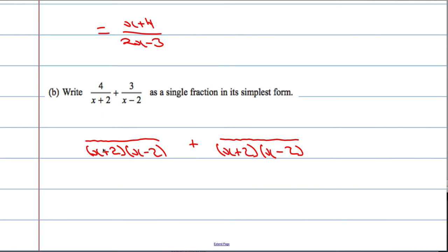So if I take the common denominator of x plus 2 times x minus 2 and I divide it by x plus 2, I'm going to get x minus 2. So the top here is going to have to be 4 times x minus 2. In other words, you can see now, if I was to cancel x minus 2 above and below the line, I'd end up with 4 over x plus 2, which is what I had to begin with.